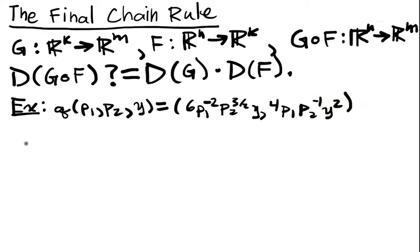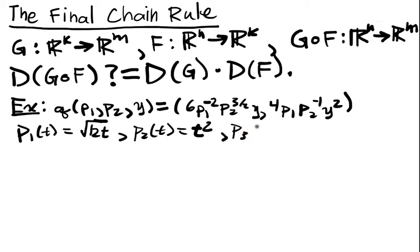We have that friendly fellow. And now we're going to assume that p1(t) is equal to square root of 12t, p2(t) is equal to t squared, and y(t) is equal to t minus 1.